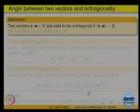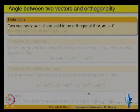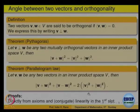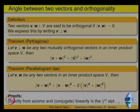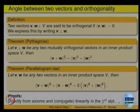Once we have the notion of an inner product, we can define perpendicularity in an abstract inner product space. Two vectors are said to be orthogonal if their inner product is equal to 0. With perpendicularity defined, we can prove the Pythagorean theorem: ‖v + w‖² = ‖v‖² + ‖w‖² when v and w are perpendicular. The proof is straightforward — write the norm squared as the inner product of the vector with itself, expand, and the cross product terms vanish due to perpendicularity.